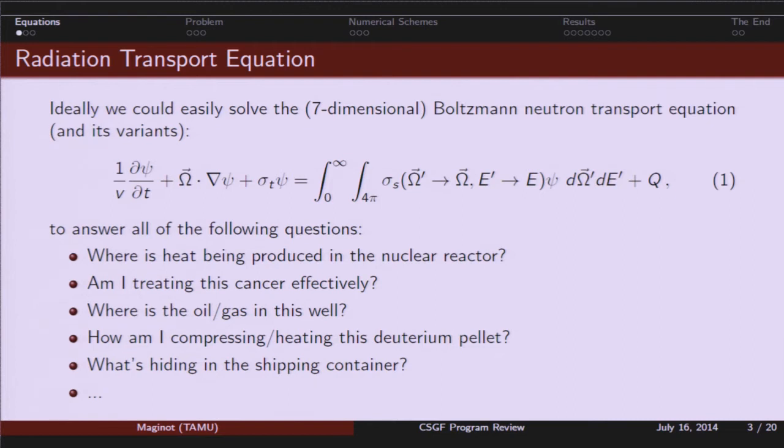So this equation is really hard to solve, but if we could solve it, or if you want to answer these type of questions, you need to solve some form or simplification of the full transport equation. So obviously we solve the transport equation or usually the diffusion approximation for trying to determine reactor power output. Where is the heat being made in the reactor? How do I cool it so I don't melt the reactor down? You can do things like cancer treatment. Am I irradiating the cancerous tissue, or am I irradiating healthy tissue?